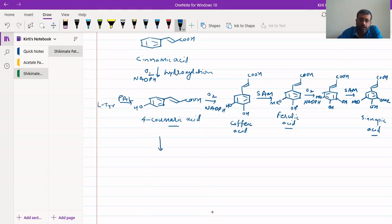So this we get after reduction of this COOH group into CH2OH and here we have the same OH. So this becomes para-cumeryl alcohol.